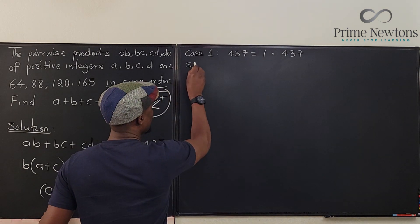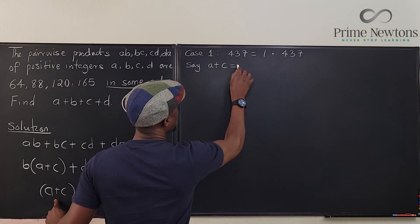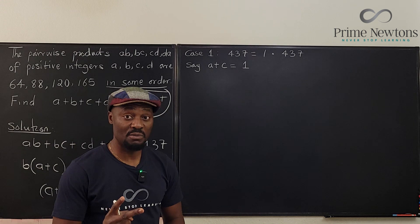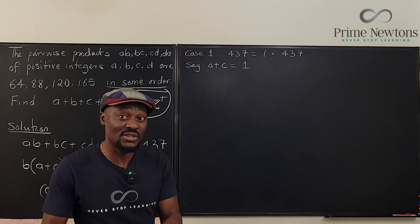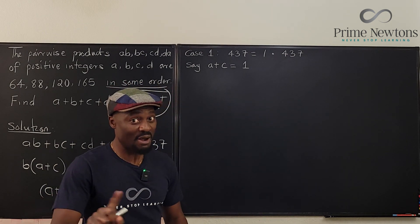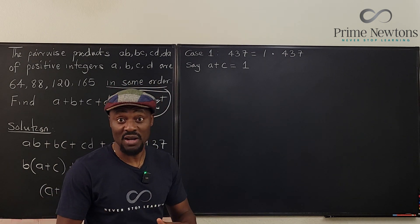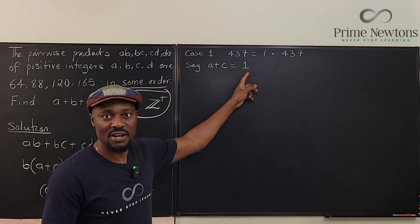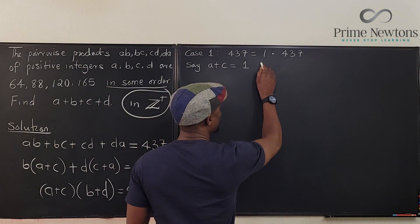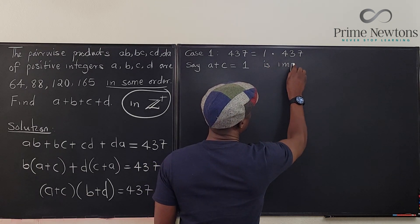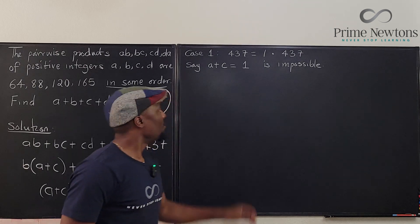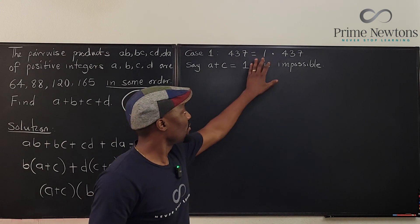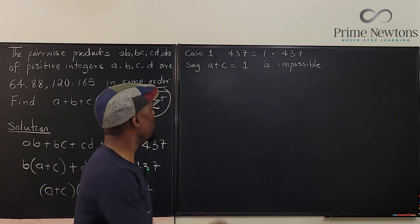Say A plus C is equal to 1. This is impossible, because the sum of two positive integers cannot be 1, because the smallest positive integer is 1. So if this is 1, this has to be 1 if it is the smallest, and 1 plus 1 cannot be 1. Therefore, this is impossible. So because we cannot have one of these factors equal to 1, this option is not possible.